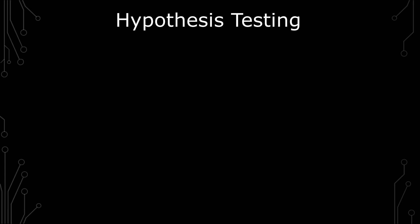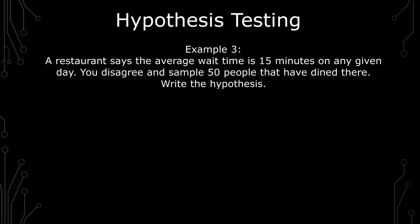The last statement is a restaurant says the average wait time on any given day is 15 minutes in their weight room. You disagree and sample 50 people that have dined there. Write the hypothesis. The null hypothesis is written as mu equals 15 minutes. The alternative hypothesis is mu does not equal 15 minutes.